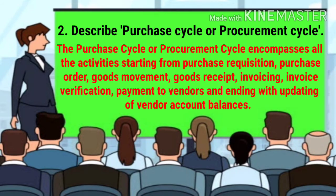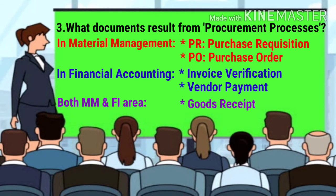The next question is: describe the purchase cycle or procurement cycle. The purchase cycle starts from purchase requisition, purchase order, goods movement, goods receipt, invoicing, invoice verification, payment to vendors, and ends with updating of vendor account balances.